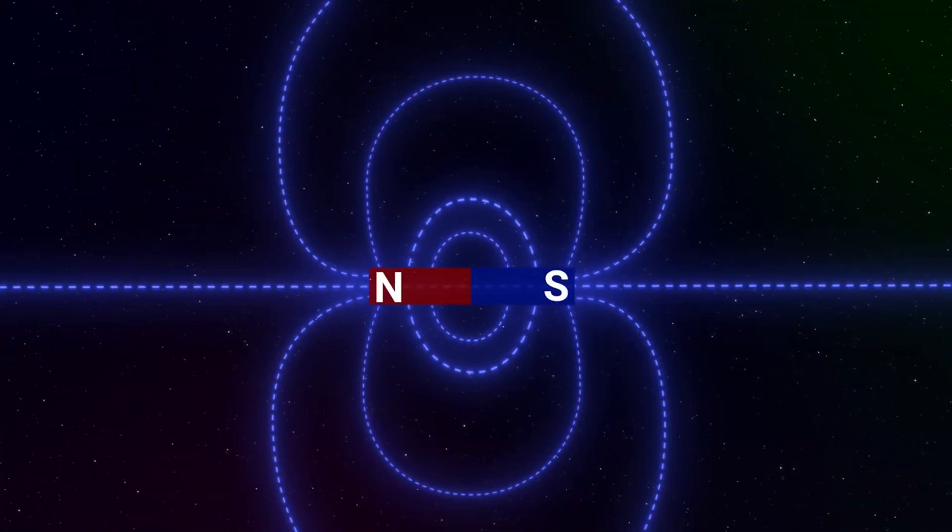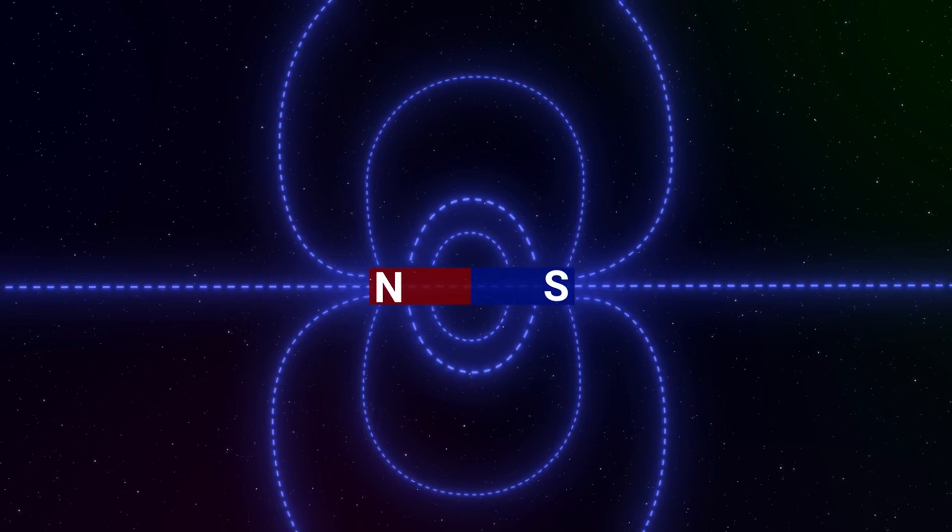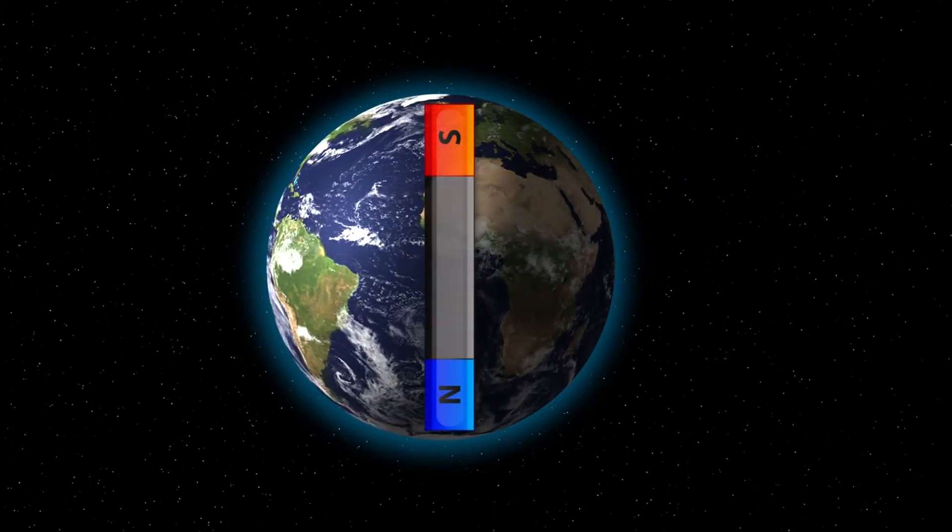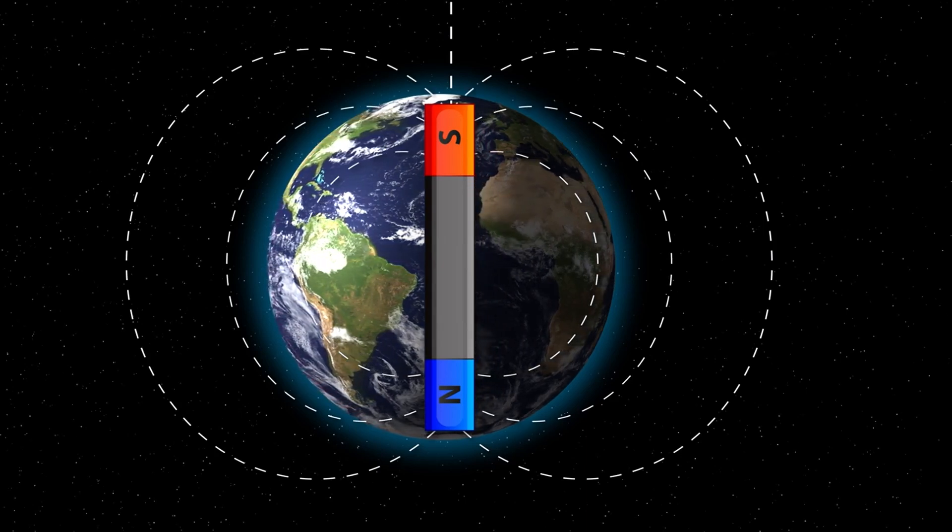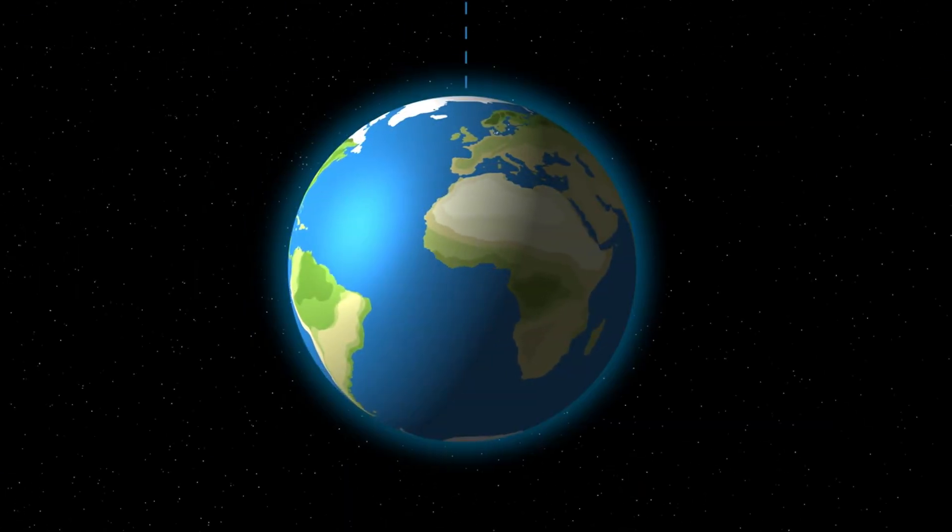The Earth's magnetic field is not constant, it changes over time. These changes are known as geomagnetic reversals, where the magnetic poles switch places. While this might sound alarming, it's a natural process that has happened many times in Earth's history.